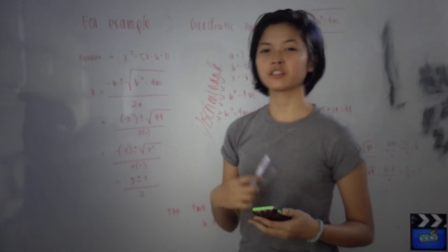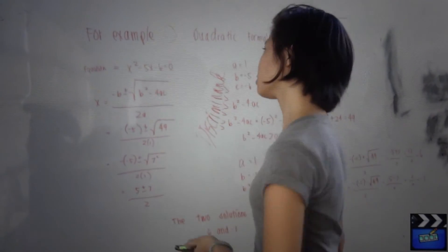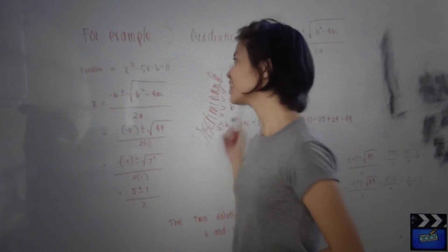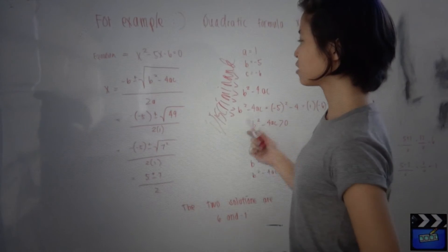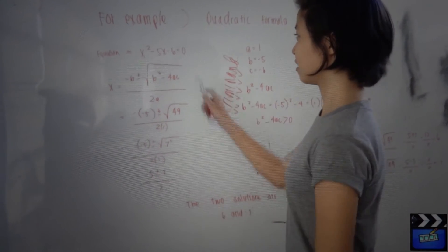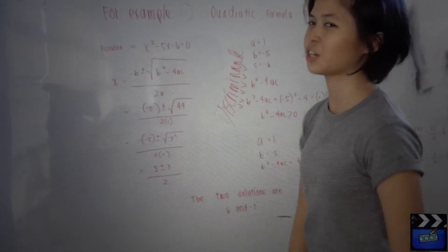If the discriminant is negative, the quadratic equation has no solution in the area of real numbers. To show you what the quadratic equation is, we're going to solve the equation x squared minus 5x minus 6 equals zero.